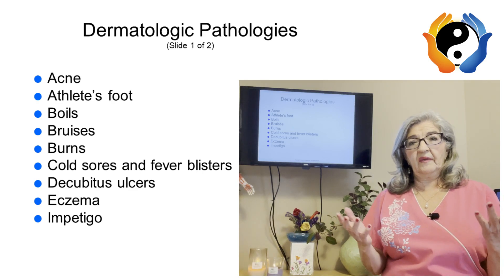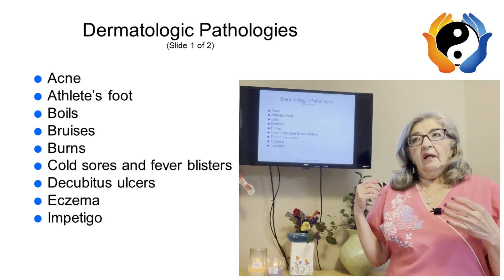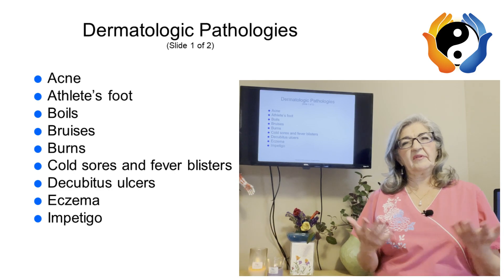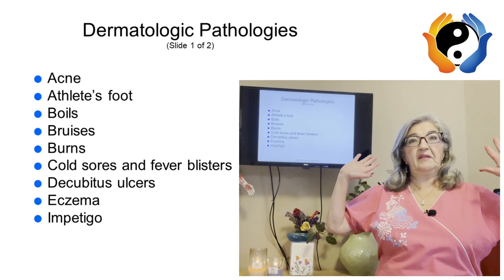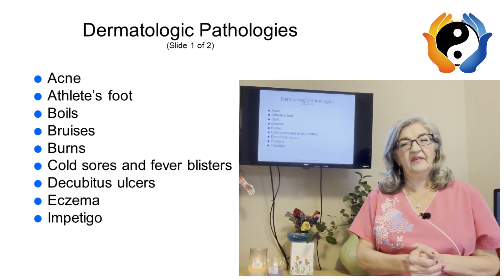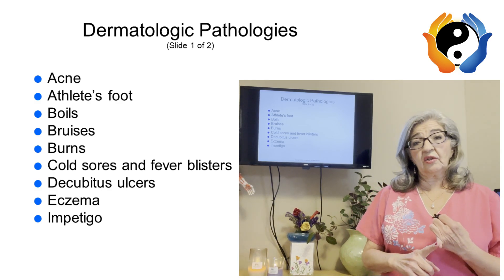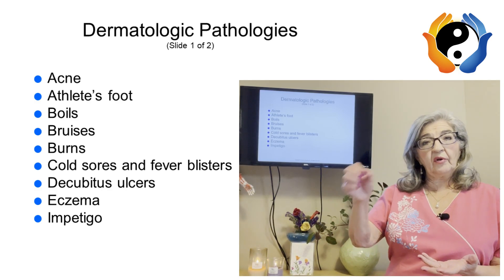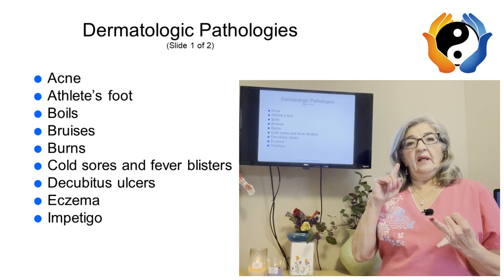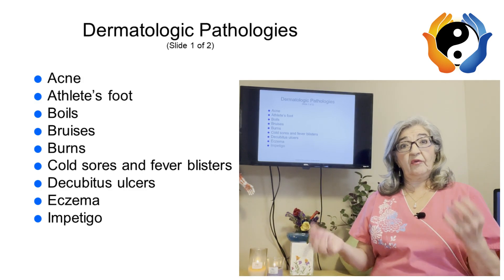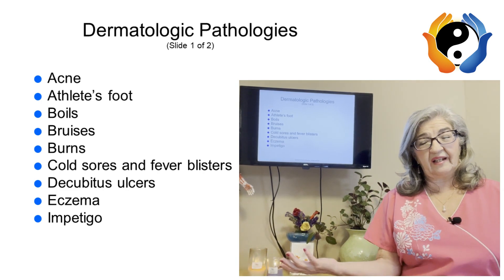Fourth-degree burn clients are hospitalized and extremely dangerous — you're unlikely to see those clients. A common example of a first-degree burn is sunburn, where the skin starts peeling — that's the epidermis. Burns can also come from radiation, chemicals like drain openers, heat exposure, cold exposure, and friction — like rug burns.